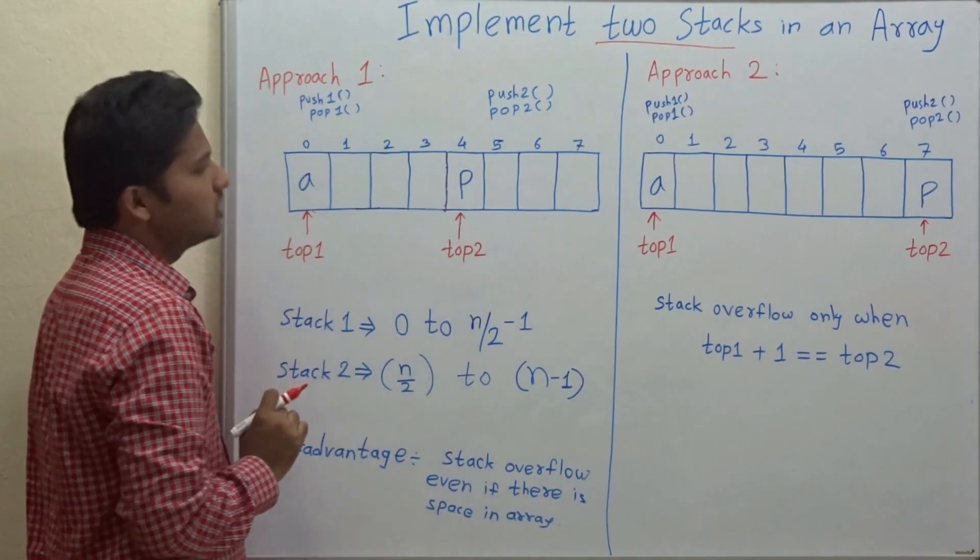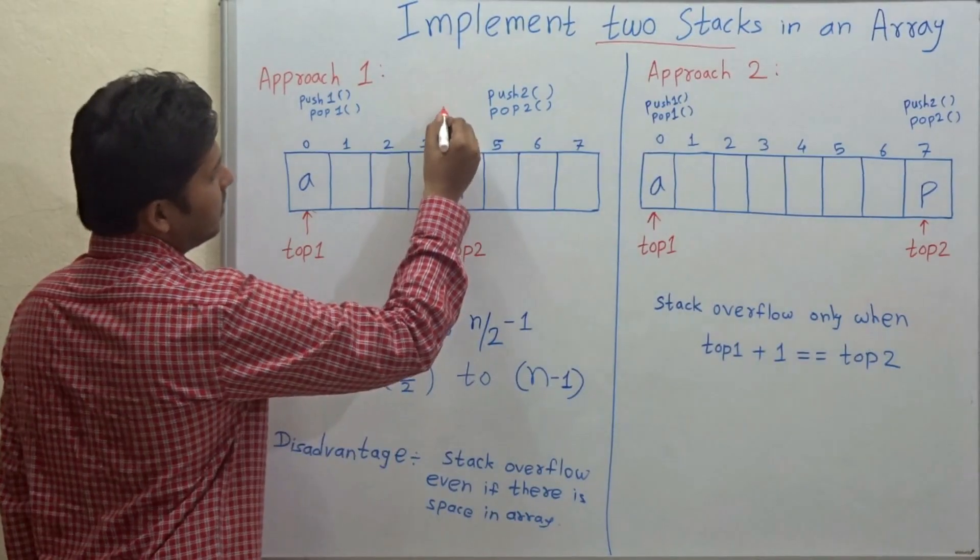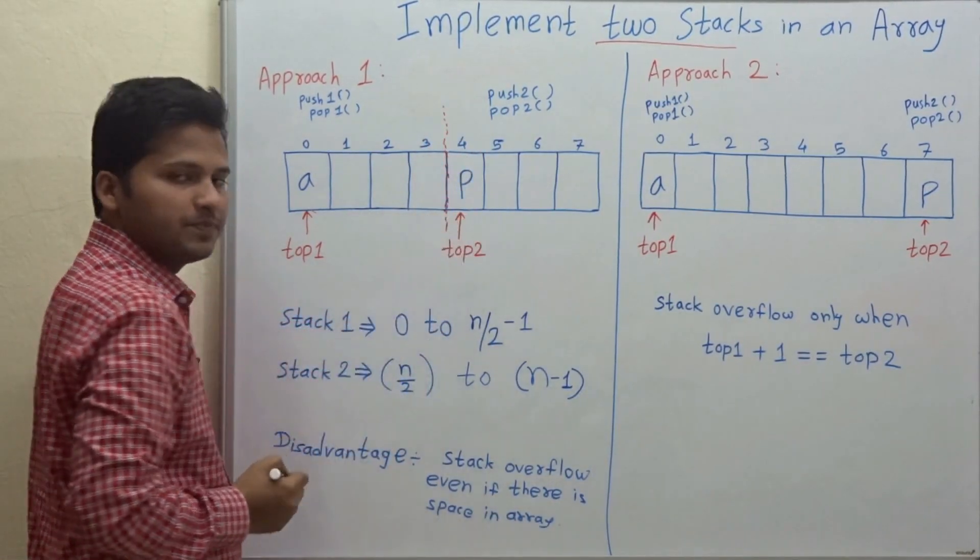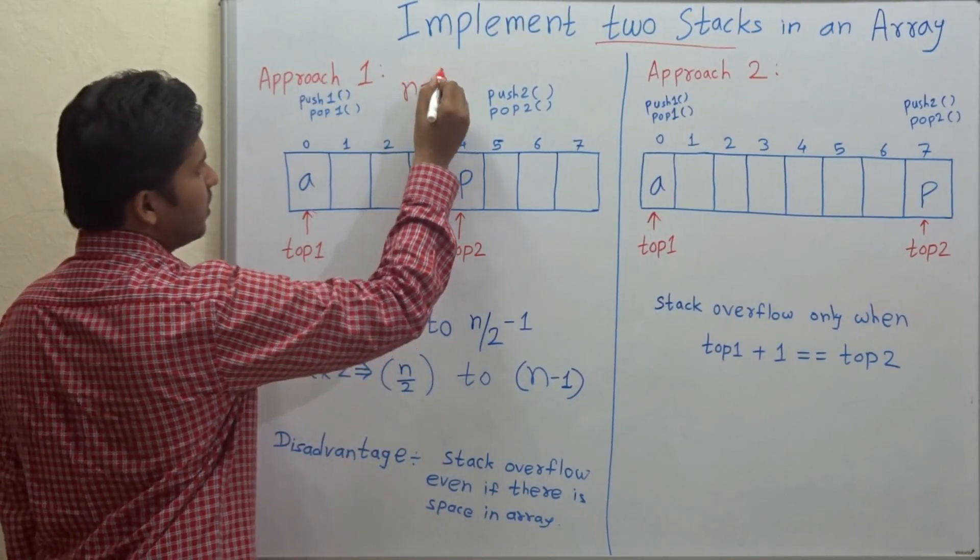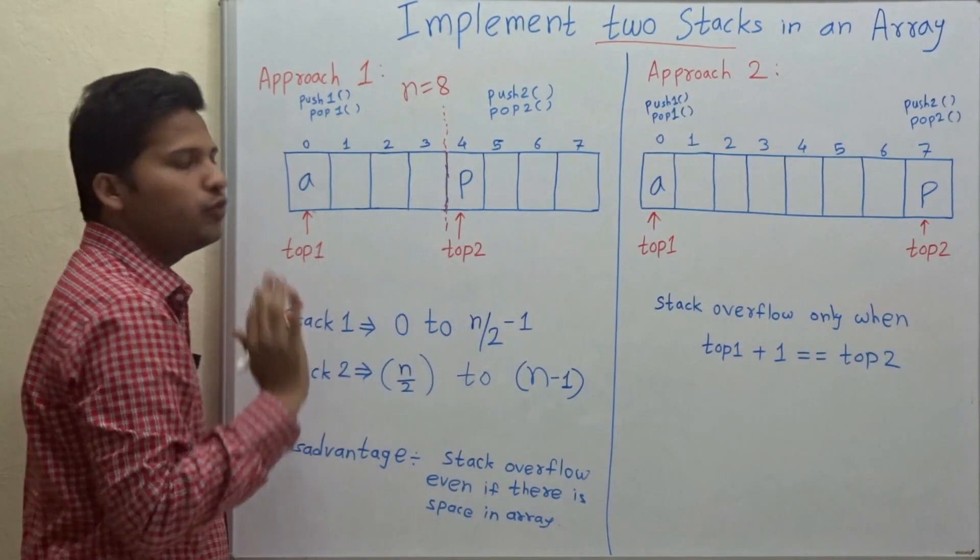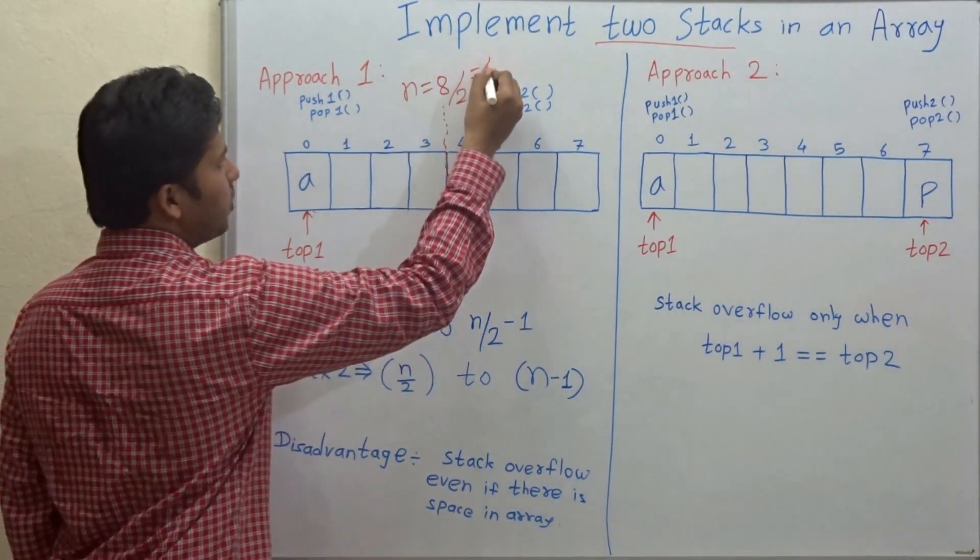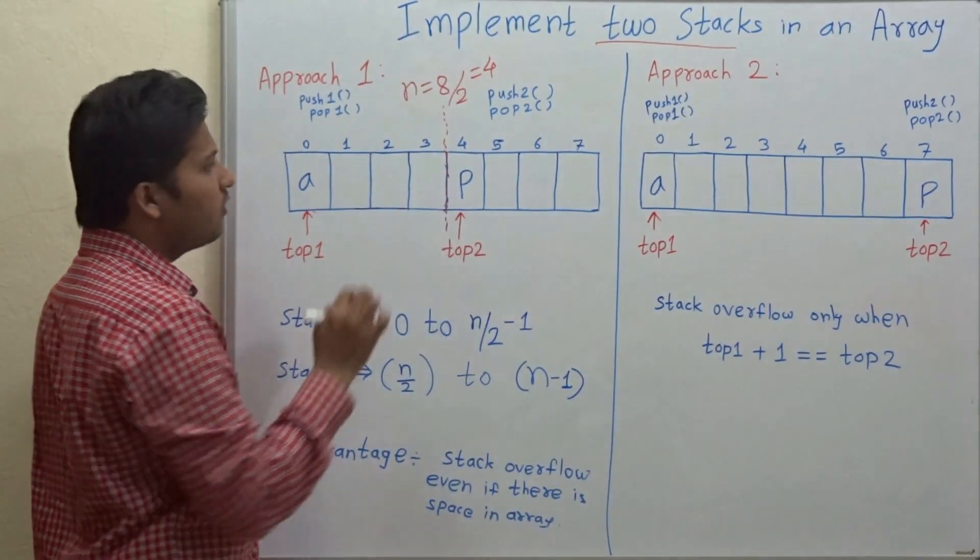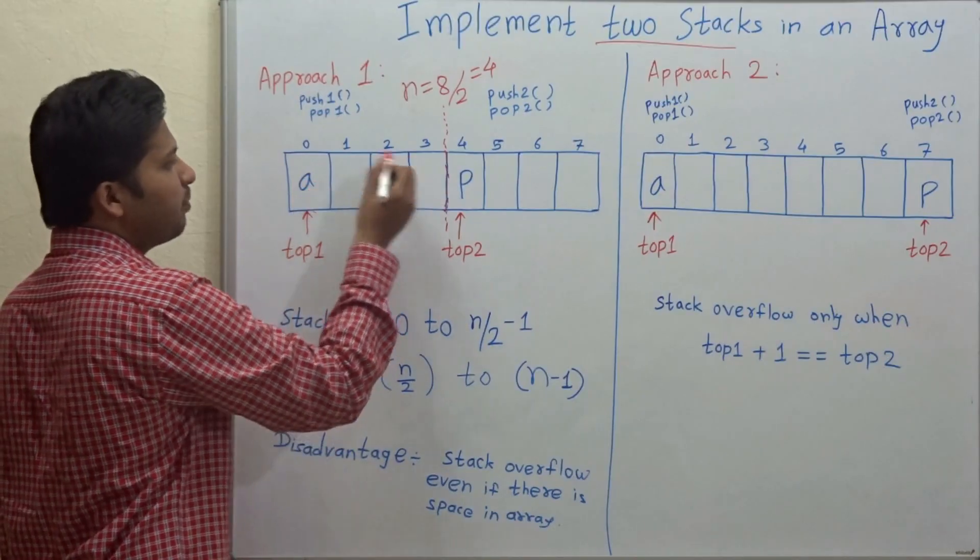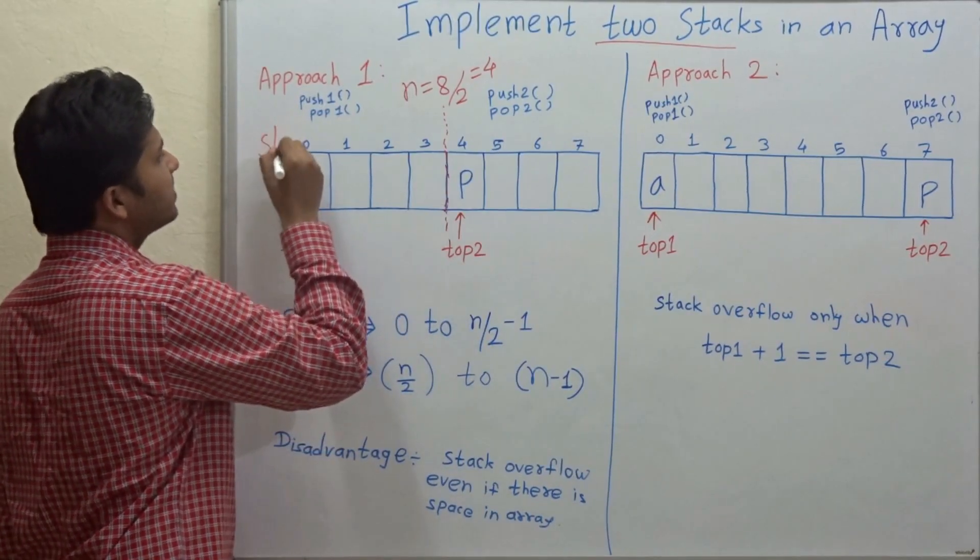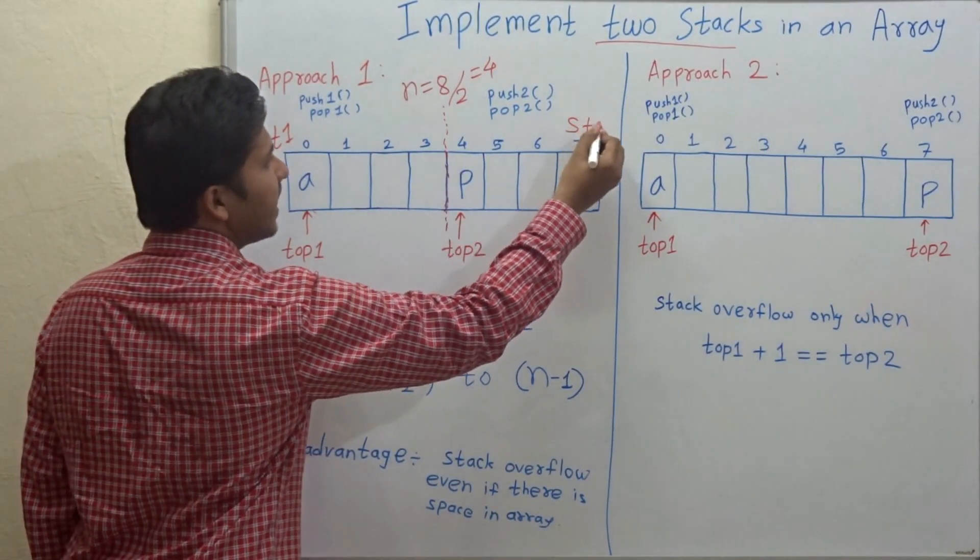In the first approach, we divide the array into two parts. So let us divide this array into two parts. The size of the array is 8. So when we divide it into two parts, then 8 by 2 that is equal to 4 is the size of each stack. The first part of this array is called stack 1 and the second part is called stack 2.